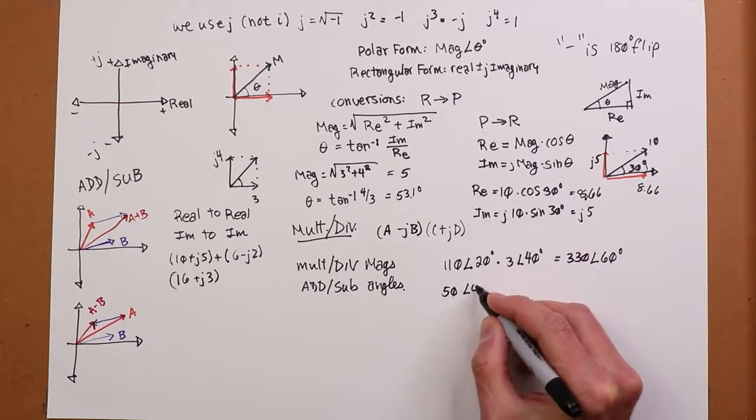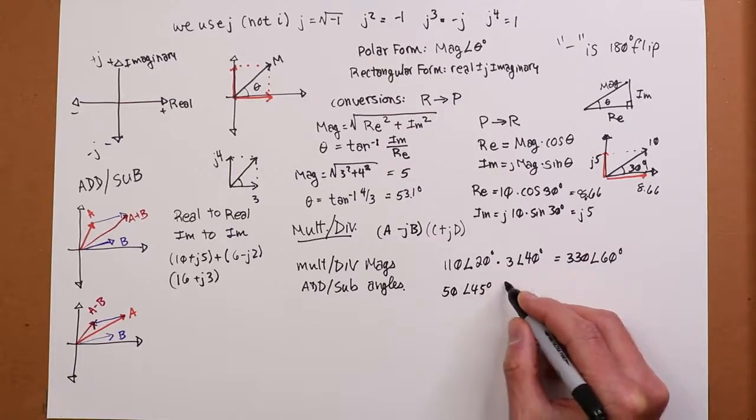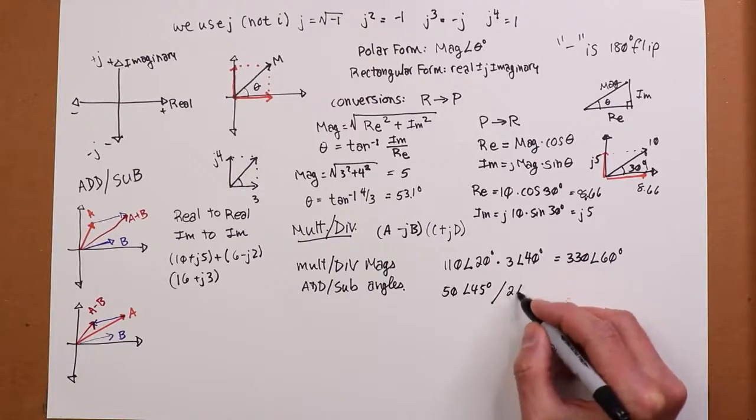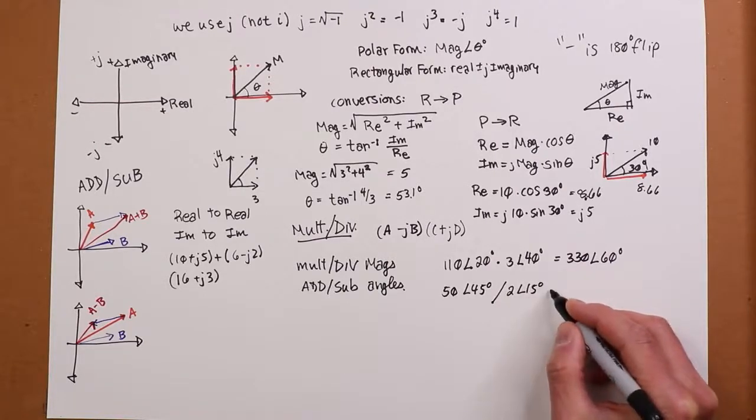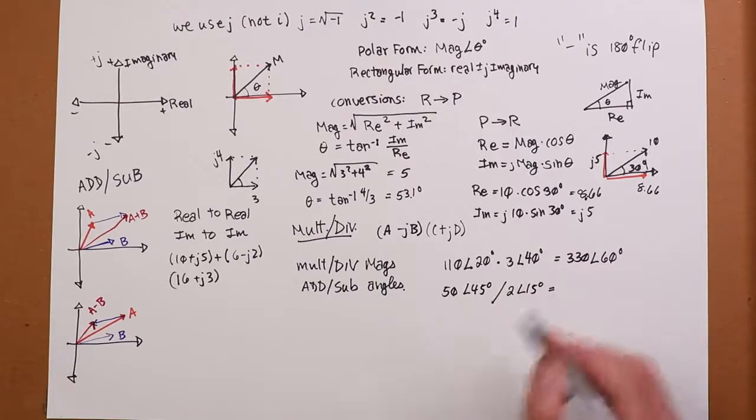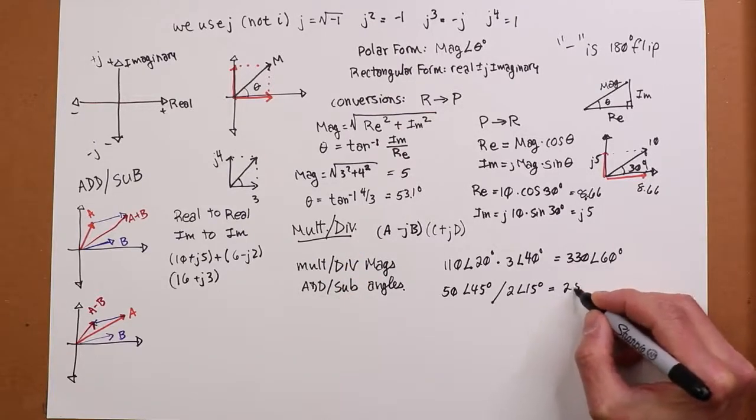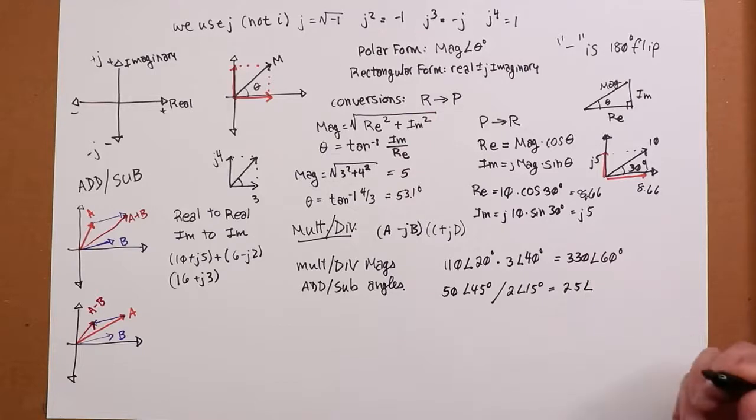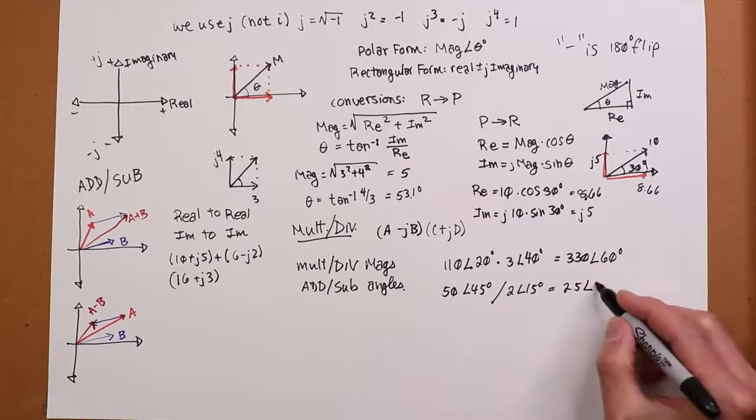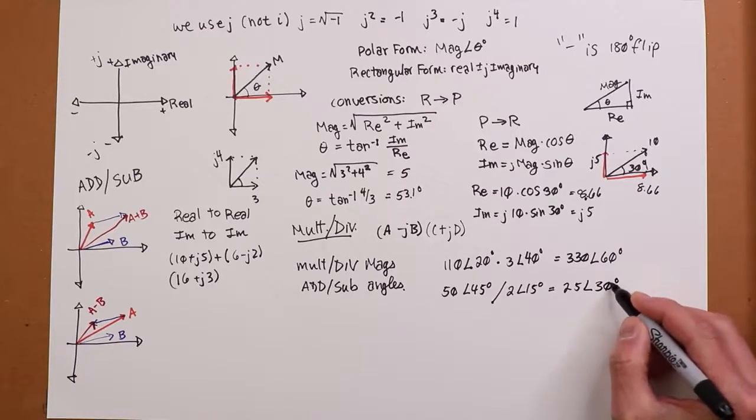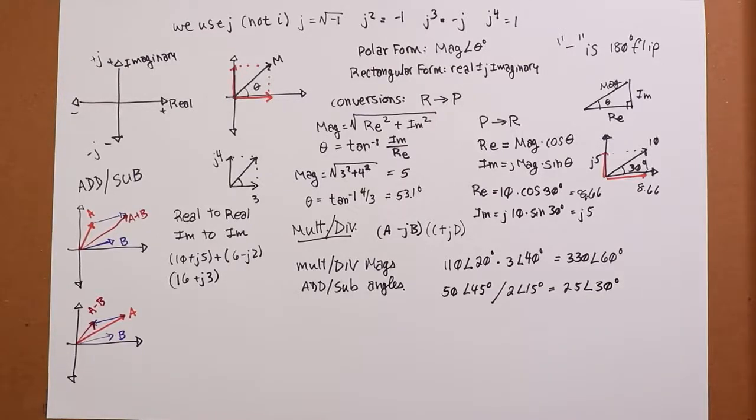50 at an angle of 45 degrees, and I want to divide that by 2 at an angle of 15 degrees. That's going to be 50 divided by 2. There's your divide. So that's going to be 25. And then we subtract the angles. So I'm going to subtract 15 from 45, and that's going to get me 30 degrees. That's your final result.